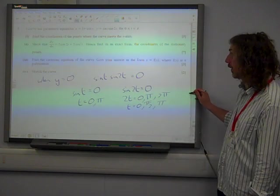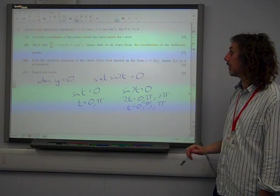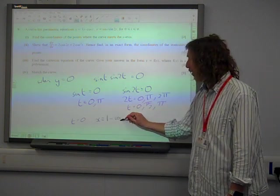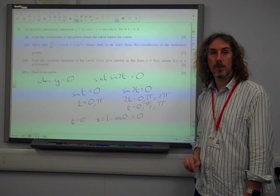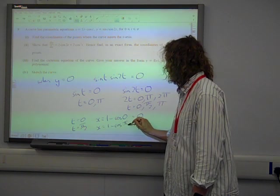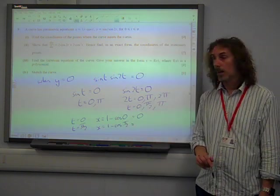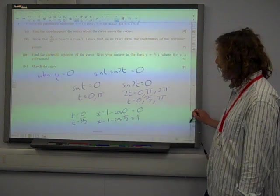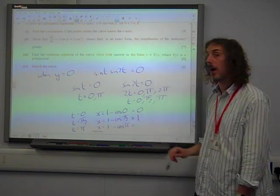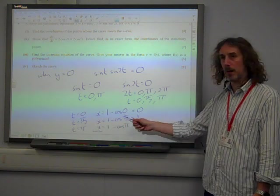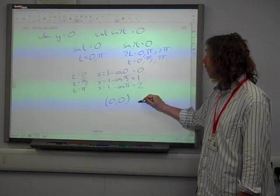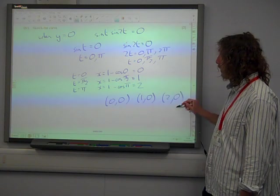For those three values we need the x coordinates. Find the coordinates of the points where it meets the x axis. So if t equals 0, x is 1 minus cos pi by 2. Now cos of pi by 2 is 0, so that's 1 minus 0 is 1. And if it is pi, x is 1 minus cos of pi. Cos of pi is minus 1, so that's 1 minus minus 1, which gives us 2. So the coordinates of the points are 0, 0, 1, 0, 2, 0.